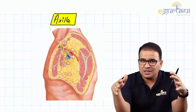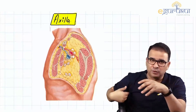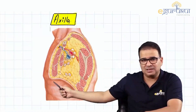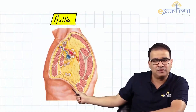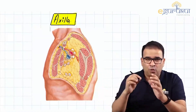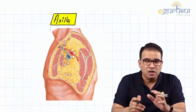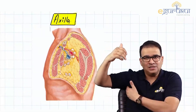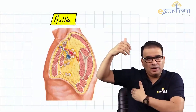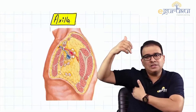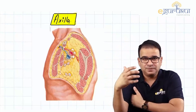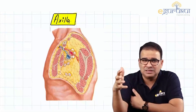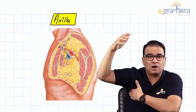The axilla is a truncated cone-like structure, so we have an anterior wall, a posterior wall, and a floor. The floor is just by the skin and the fascia. The question is what forms the lateral wall and the medial wall, because the sagittal section is not going to show you that. This being the axilla, the medial wall is obviously toward the chest side. The medial wall is formed by the upper ribs — you can see the upper four ribs — along with their intercostal muscles and the serratus anterior muscle present around them.